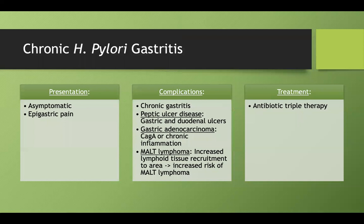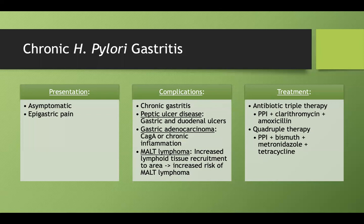To treat H. pylori, there are two therapies you need to know cold. Antibiotic triple therapy consists of a PPI, clarithromycin, and amoxicillin. You can also use quadruple therapy, which is falling more in favor even for non-allergic patients: a PPI plus bismuth, metronidazole, and a tetracycline.